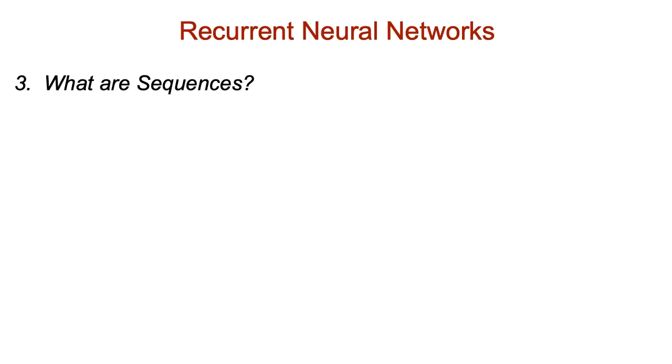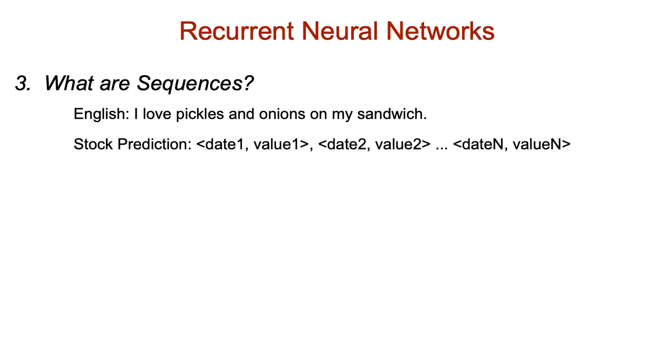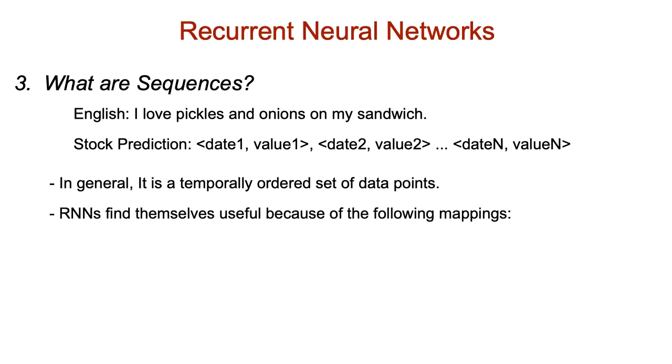We can see recurrent neural networks as throwing sequences into the mix. So what are sequences? In English, a sequence could be a sequence of words in a sentence. In stock prediction, a sequence could be a sequence of prices over time. In general, a sequence is a sequence of data that has some defined order to it. Recurrent neural networks can transform sequences to vectors. They can transform vectors into sequences, or even sequences to other sequences. Because of such general transformations, RNNs find themselves useful in a host of applications. And we'll talk about these in a bit.